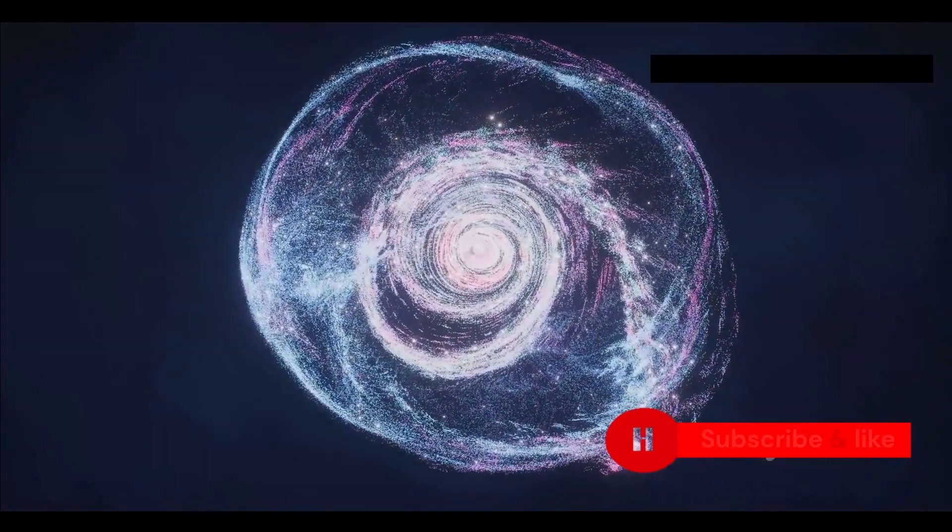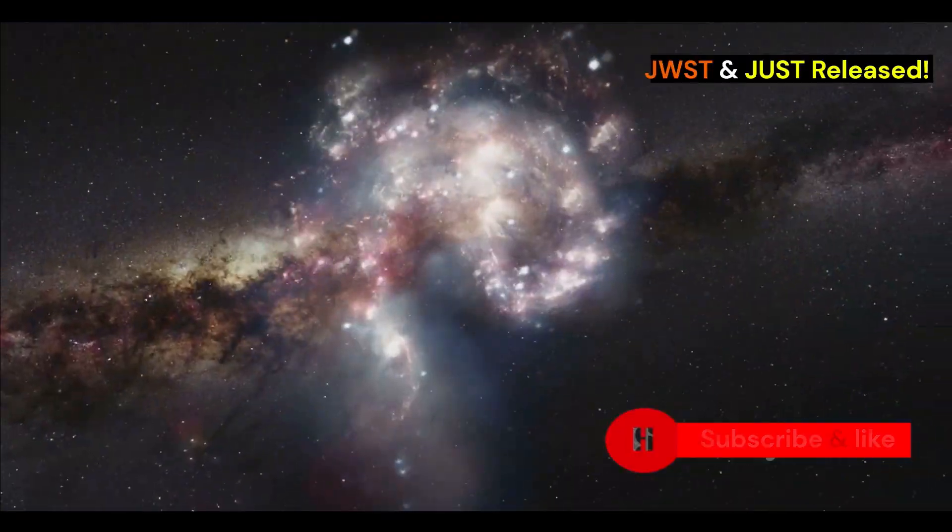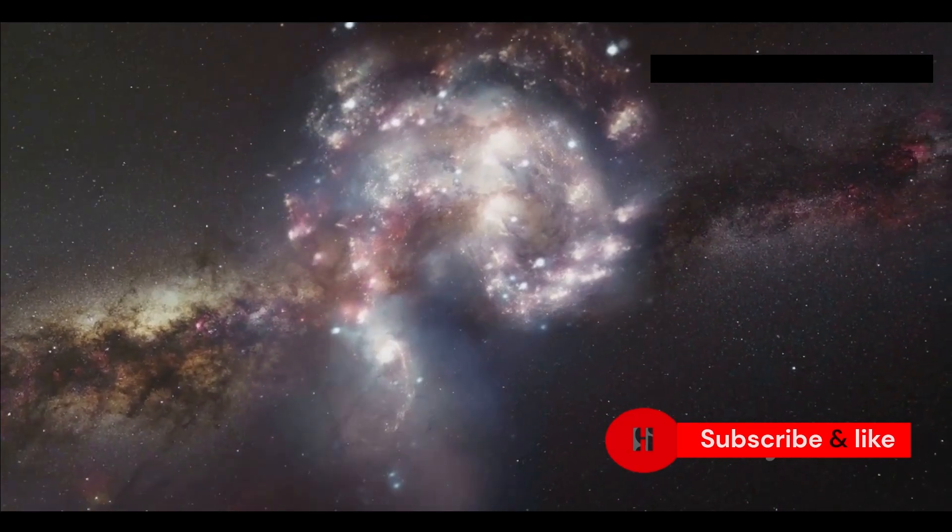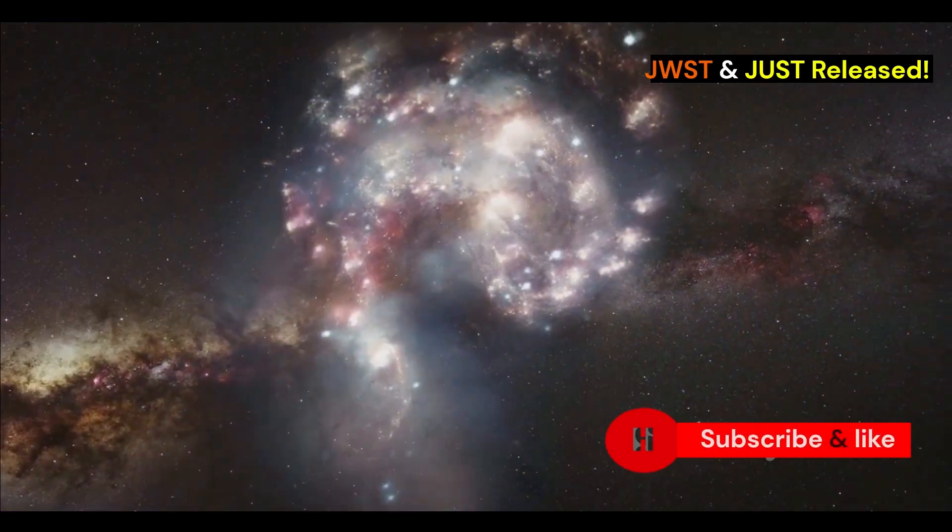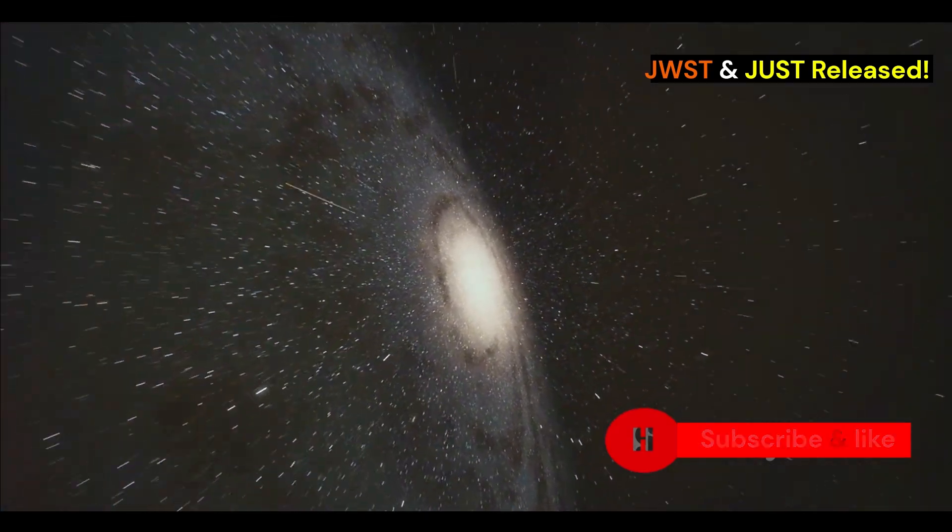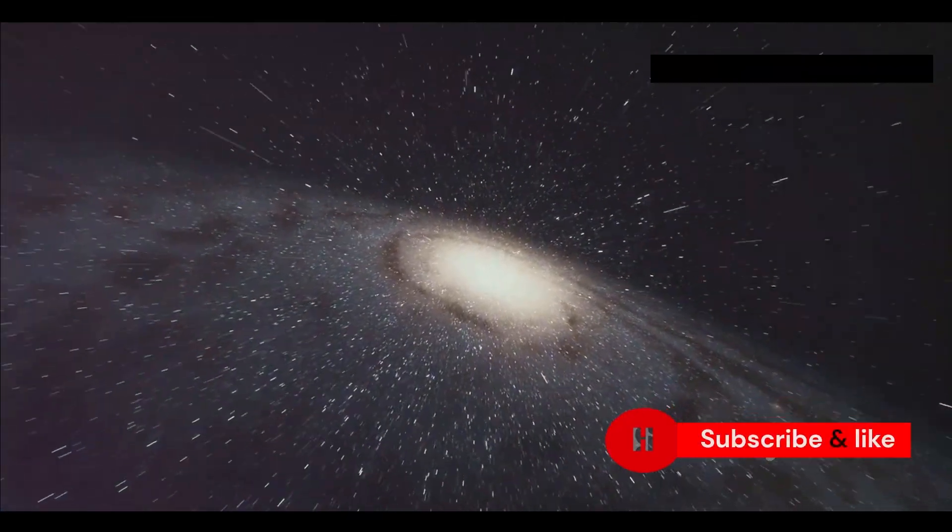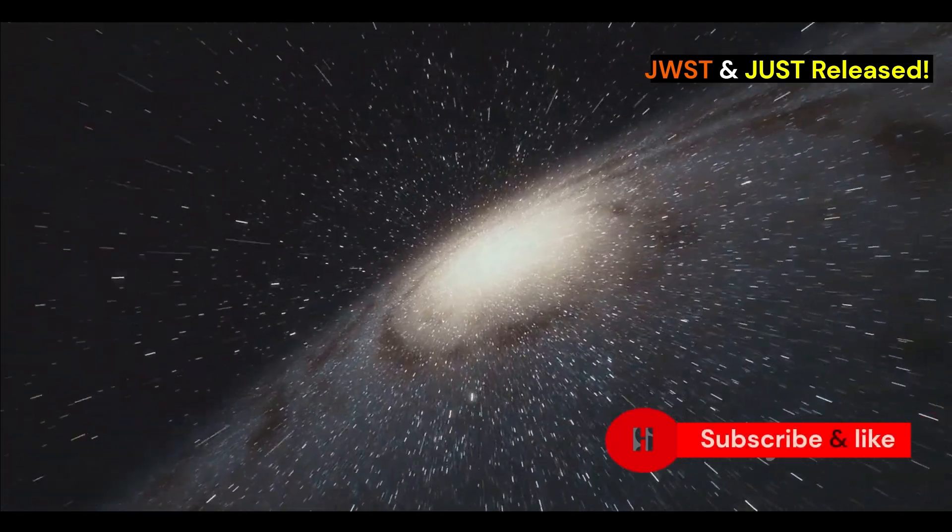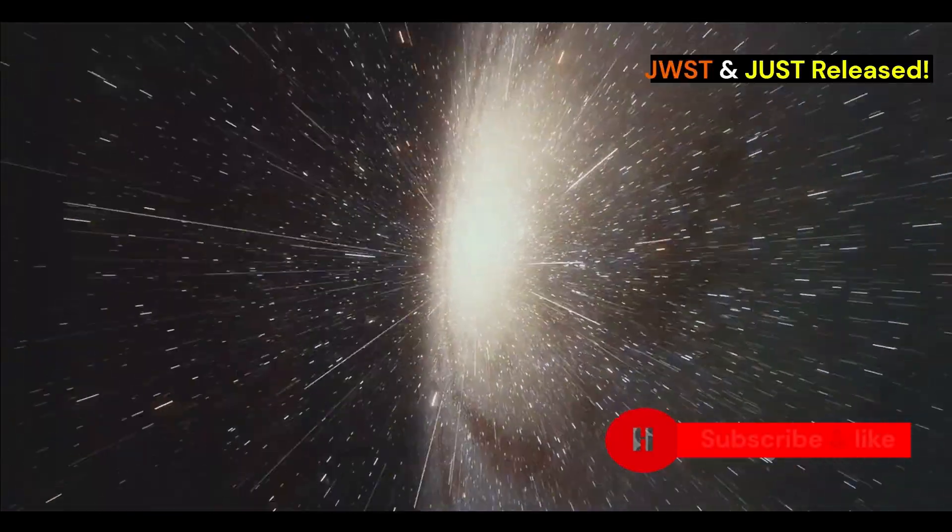JWST's infrared vision is perfect for studying galaxies that are full of dust, like the cartwheel galaxy. This galaxy looks like a wagon wheel, which is why it's named that way. Astronomers think it got that shape when another galaxy smashed into it really fast.